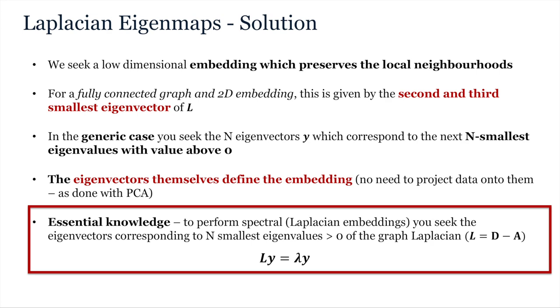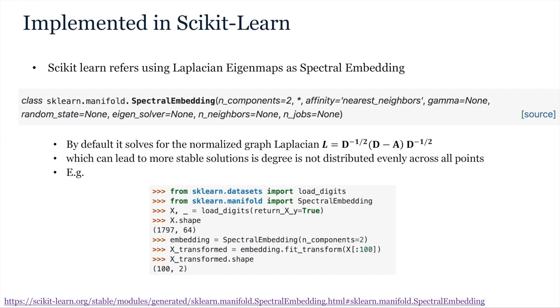So in Tuesday's tutorial, we will go through the steps of implementing this from scratch for the Swiss Roll dataset and we will then do the same thing for scikit-learn. Note that for the reasons we described before relating the eigenvectors of the graph Laplacian to the spectra of the Laplace operator, many people, including the scikit-learn team, refer to the Laplacian eigenmaps embedding method as spectral embedding. Therefore, to run Laplacian eigenmaps in scikit-learn, you need the spectral embedding method from the manifold class. And another very important thing to note is that rather than estimating the eigenvectors of the standard graph Laplacian, scikit-learn estimates the eigenvectors of the normalized graph Laplacian as this has been shown to lead to more stable solutions where degree is not distributed evenly across all points. So that's it for Laplacian eigenmaps.